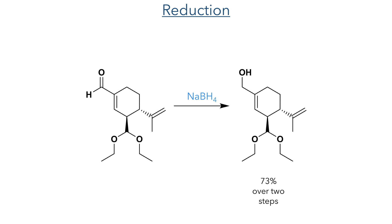This compound was taken forward without purification, where the aldehyde was reduced using sodium borohydride to produce the primary alcohol in a 73% yield over two steps.